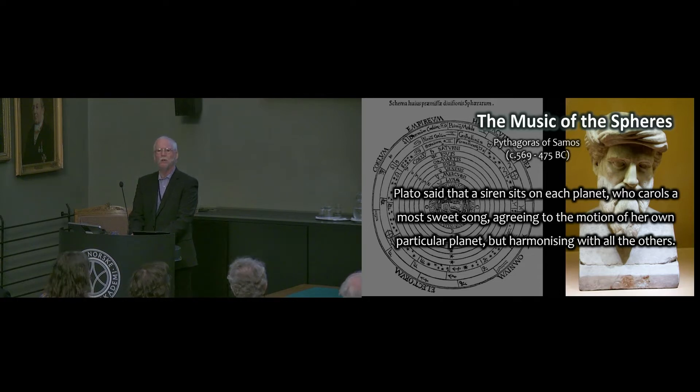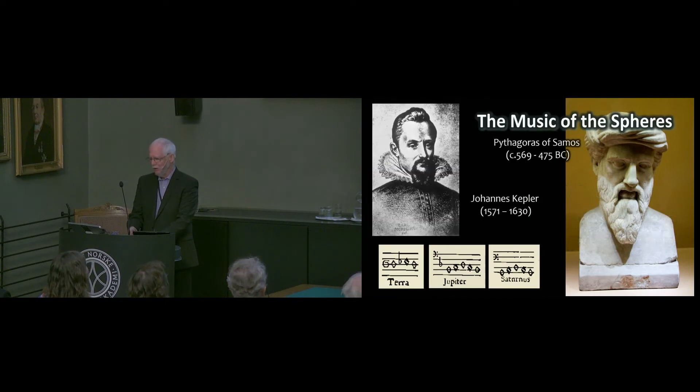Following Pythagoras, Plato said that there's a siren that sits on each planet who carols a most sweet song, agreeing to the motion of her own particular planet, but harmonizing with all the others. 2,000 years later, Johannes Kepler was so enamored with that idea that he spent years trying to fit the motion of the planets into a harmony. And that musical notation that you see up here is from Kepler's own work.